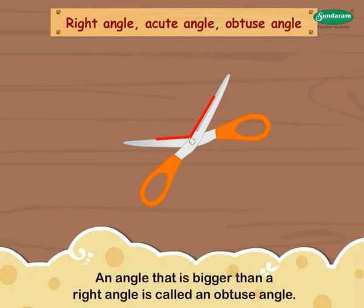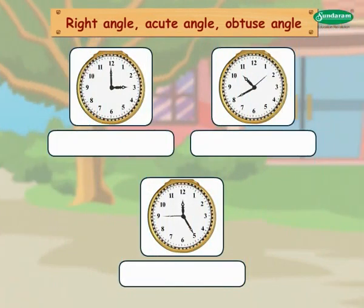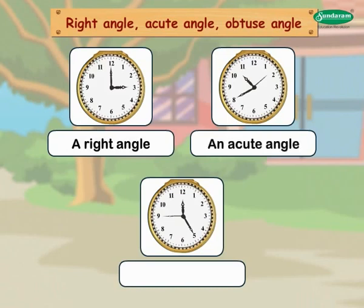An angle that is bigger than a right angle is called an obtuse angle. Look at the hands of this clock. At 3 o'clock, the hands of the clock are in a right angle. At 10:40, the hands of the clock are at an acute angle. At 12:25, the hands of the clock are at an obtuse angle.